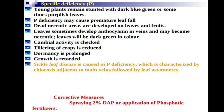Corrective measures for phosphorus deficiency include spraying two percent DAP (di-ammonium phosphate) or application of phosphatic fertilizers. Important phosphorus deficiency disorders to remember are reduced tillering, prolonged dormancy, premature leaf fall, necrosis, and sickle leaf disease.